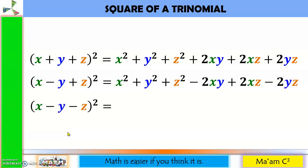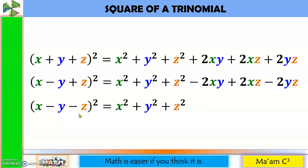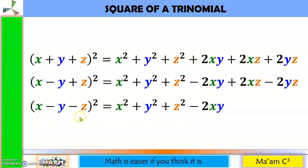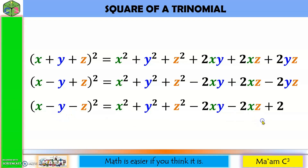Let us try this one. Let us square each term in the trinomial: x squared, y squared, z squared. Let's get one pair: positive x times negative y is negative, so negative 2xy. Another pair: positive x times negative z is negative 2xz. The last pair: negative y times negative z is positive, so positive 2yz. Easy, right?